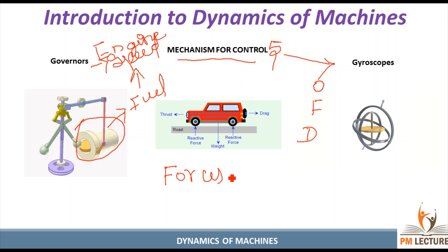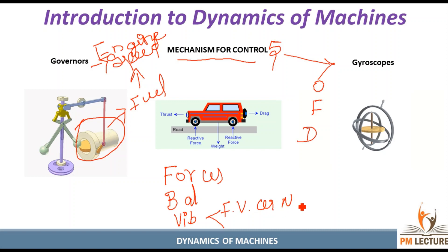So in total, we study balancing, then vibration — which has two types: free vibration (natural vibration) and forced vibration. In the fourth unit we study forced vibration, and in the fifth unit we study the mechanisms for controlling the machine — how to control the mechanism.